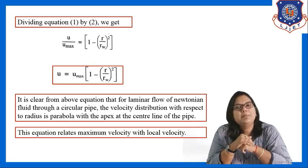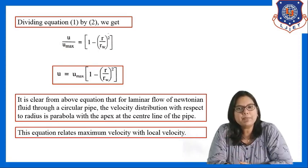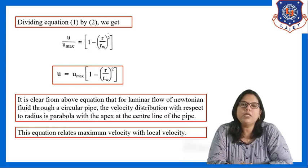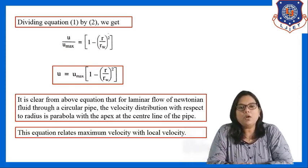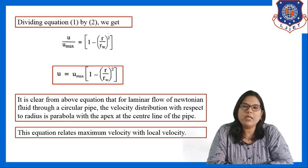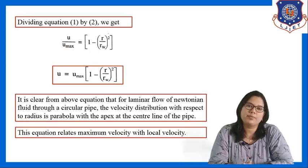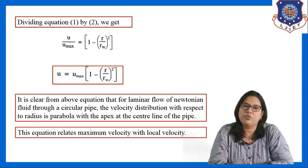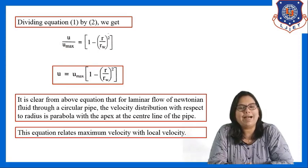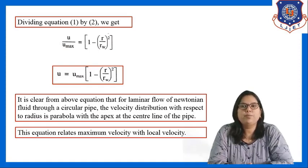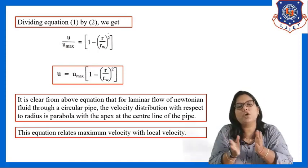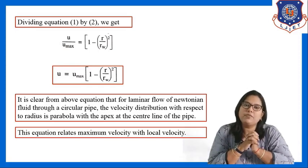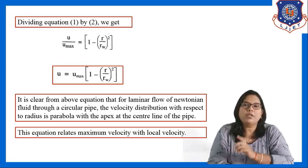This equation relates maximum velocity with local velocity. If asked to derive the equation representing the relation between local velocity and maximum velocity for laminar flow through a pipe, or to derive the velocity distribution for laminar flow through a pipe, you need to derive this equation. It gives both the velocity distribution through the pipe and the relation between local and maximum velocity.